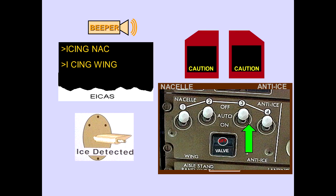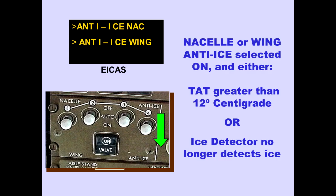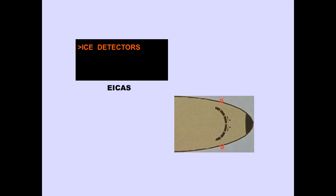The respective ICAS caution message 'icing nacelle' or 'icing wing' is displayed if any nacelle or the wing anti-ice is selected off and the ice detectors detect the appropriate level of icing. The respective ICAS advisory message 'anti-ice nacelle' or 'anti-ice wing' is displayed if a nacelle or wing anti-ice is selected on and the total air temperature is greater than 12 degrees centigrade or the ice detector no longer detects ice. The ICAS advisory message 'ice detectors' is displayed if a fault occurs in both the left and right ice detectors.